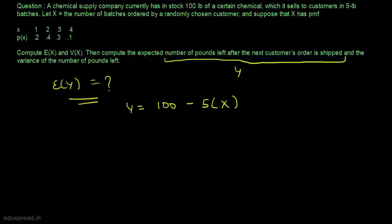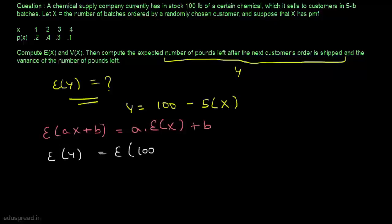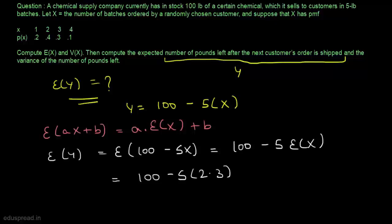To calculate the expected value of y, we use the proposition that E[ax + b] = a·E[x] + b. So E[y] = E[100 − 5x] = 100 − 5·E[x] = 100 − 5×2.3 = 88.5. The expected value of y is 88.5.